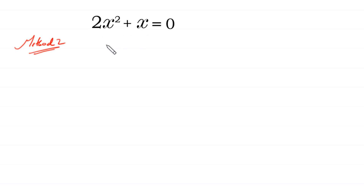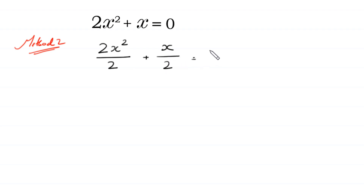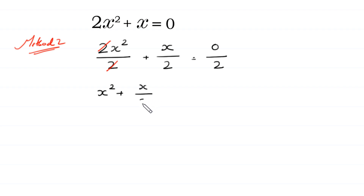In Method 2 we divide each term of this equation by 2: 2x squared divided by 2 plus x divided by 2 is equal to 0 divided by 2. This 2 cancels with this 2, leaving x squared plus x over 2 is equal to 0. Now we solve it by completing the square.